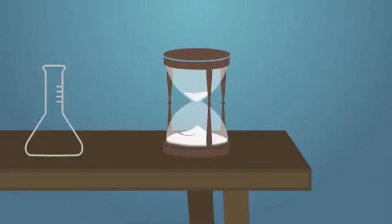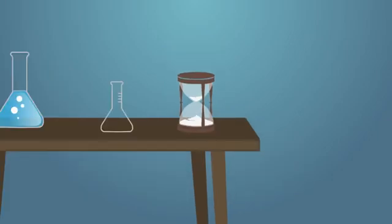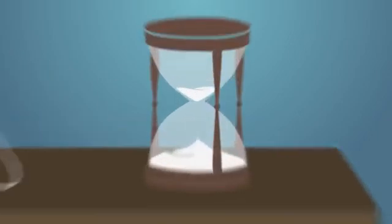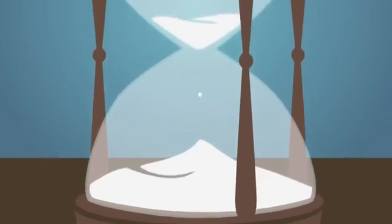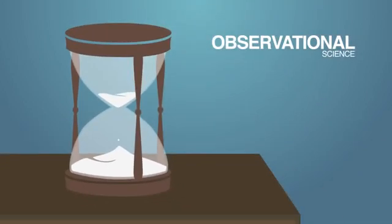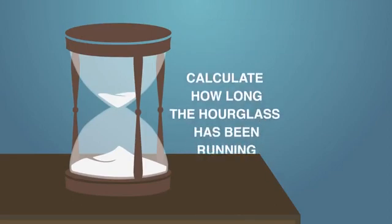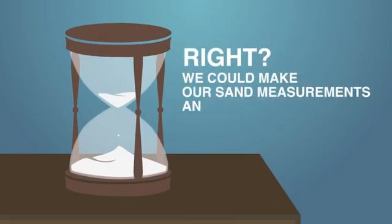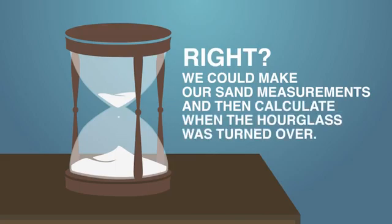Let's simplify here and talk about a typical hourglass. Let's say you walk into a room and you see an hourglass with sand at the top and sand at the bottom, and some sand sprinkling from the top chamber to the bottom. Observational science would allow us to see and measure the sand, and then calculate how long the hourglass has been running. We could make our sand measurements and then calculate when the hourglass was turned over, right?